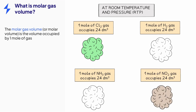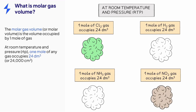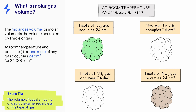This means that the molar gas volume at room temperature and pressure is 24 decimetres cubed, which is the same as 24,000 centimetres cubed. Students often get confused and think the volume of gas depends on the type of gas, but equal amounts of any gas will occupy the same volume.